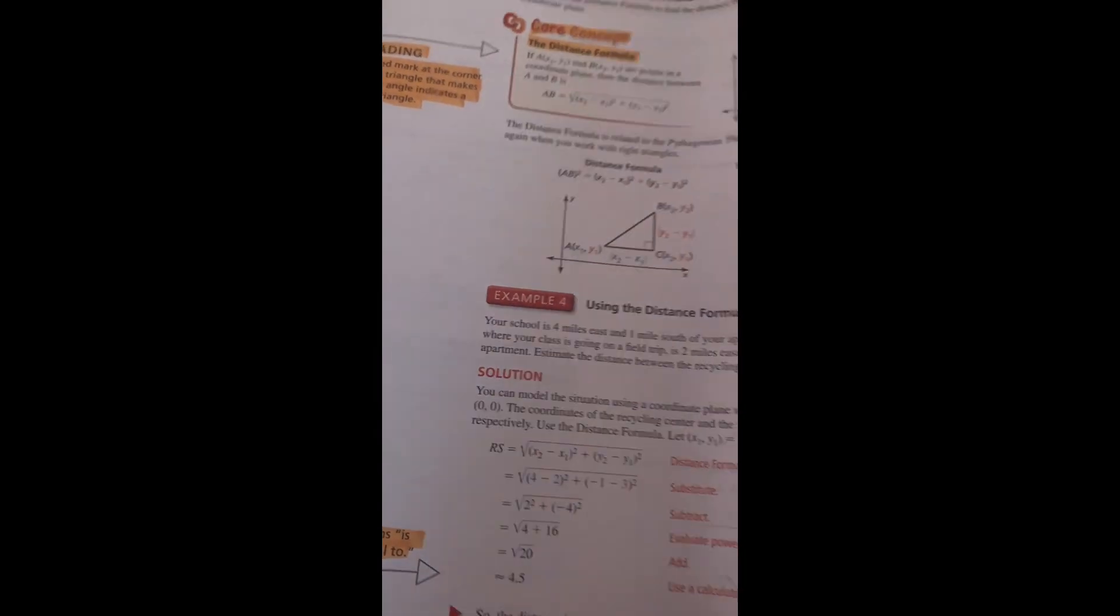Reading: The red mark at the corner of the triangle that makes a right angle indicates a right triangle. The symbol ≈ means approximately equal to.